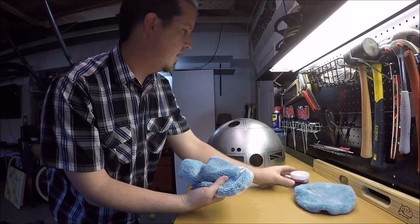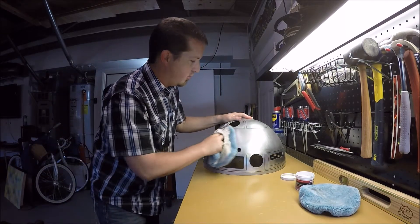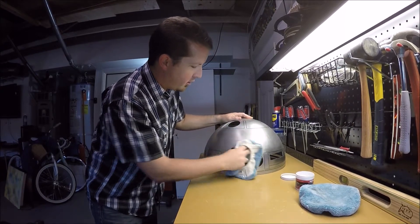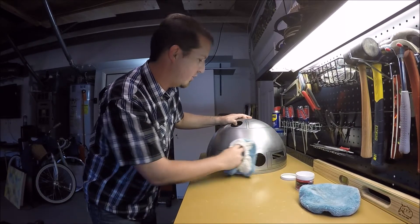With a small amount, we're going to start rubbing it into the dome. You don't have to do it too hard, but you're going to have to keep doing this until you get the right shine you're looking for.